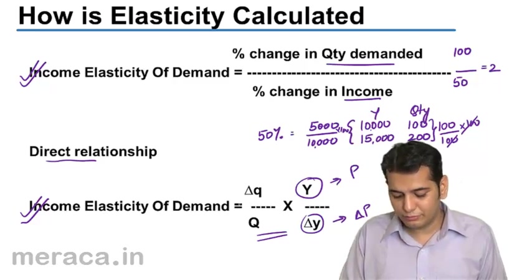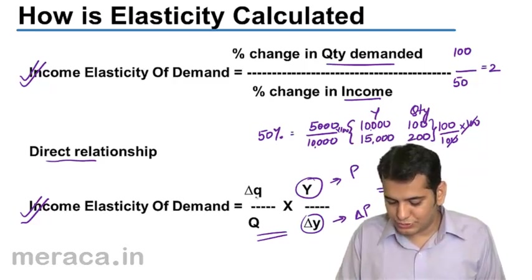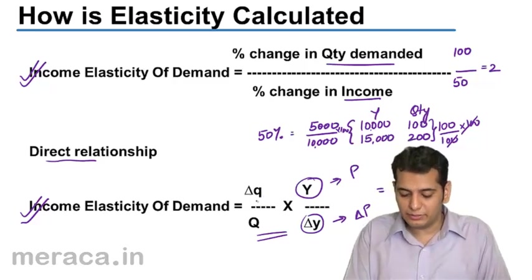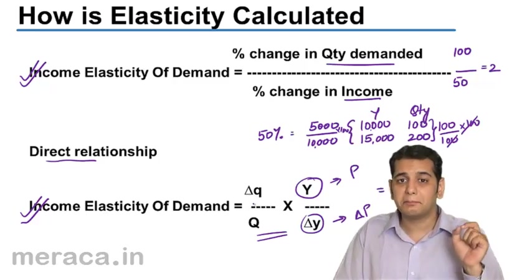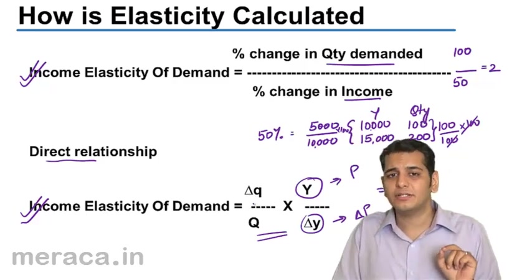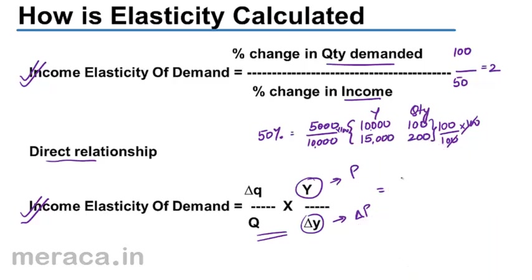Now let's calculate using the second formula. Change in quantity is 100. Original quantity is 100. Original income is 10,000. Change in income is 15,000 minus 10,000 = 5,000. So the calculation gives us the same answer: 2. We've now solved this example with both formulas.